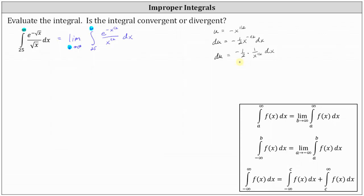Going back to the integral, we can replace negative x to the power of one half with u, and we are left with one divided by x to the power of one half, dx. We solve for that expression by multiplying both sides by negative two, which gives us negative two du equals one divided by x to the power of one half times dx. Notice negative two times negative one half is positive one, so we replace that expression with negative two du.